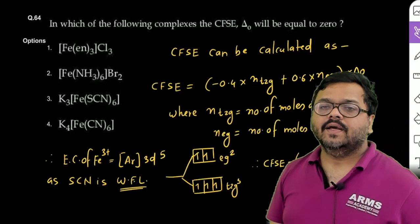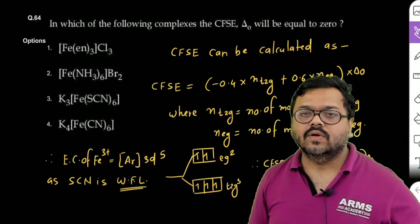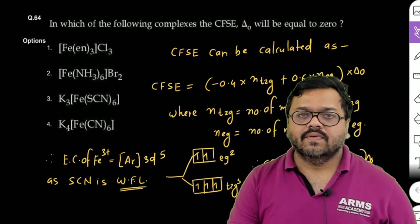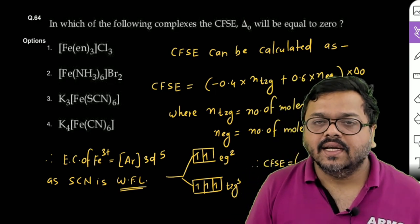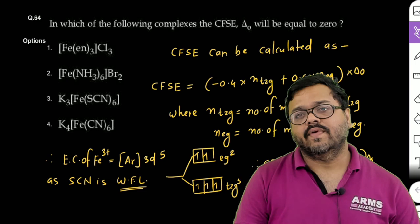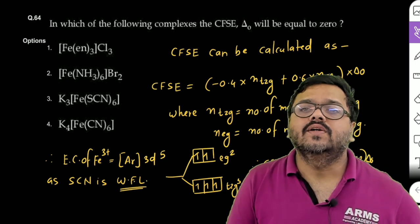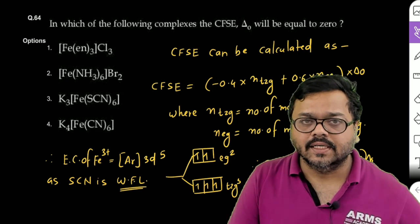Hello bachos, so aaj hame a question solve karne waale hai JEE Mains 2025. The question is on coordination compounds: in which of the following complexes will the CFSE, delta O naught value (that is delta O for octahedral complexes) be equal to 0?